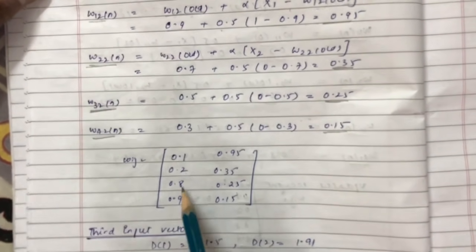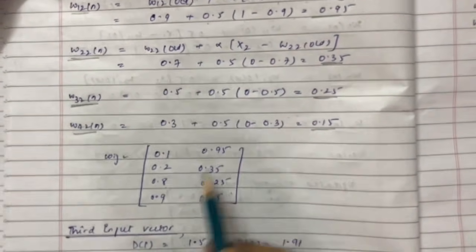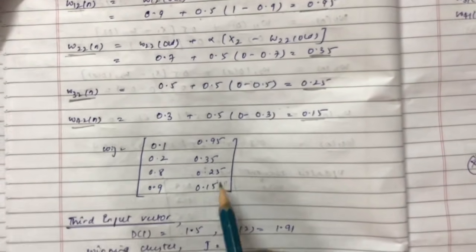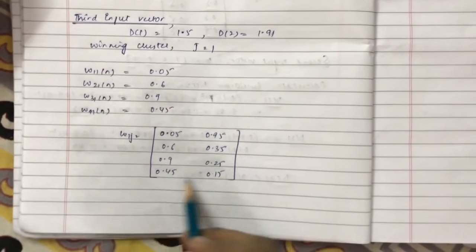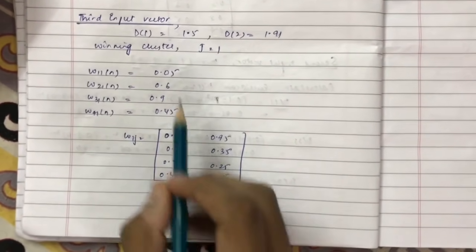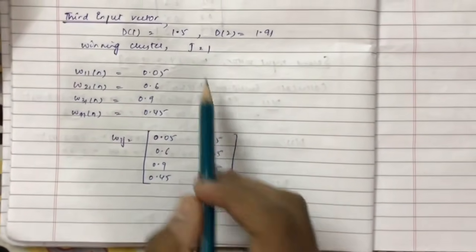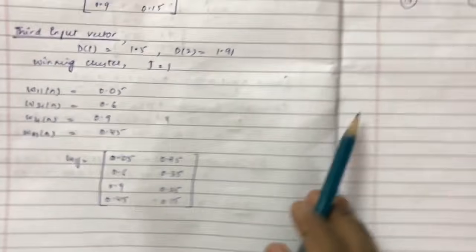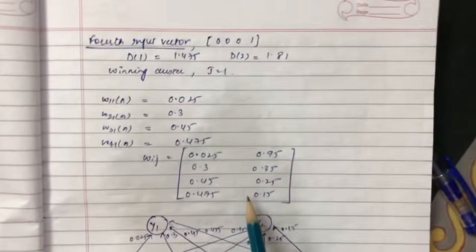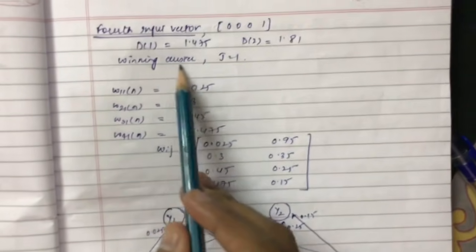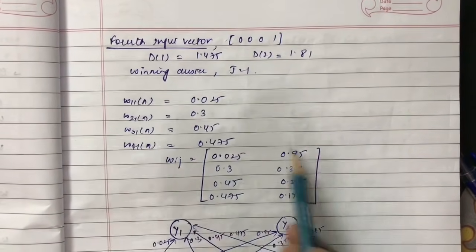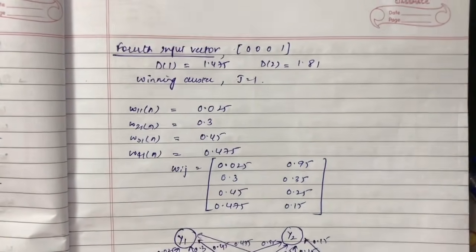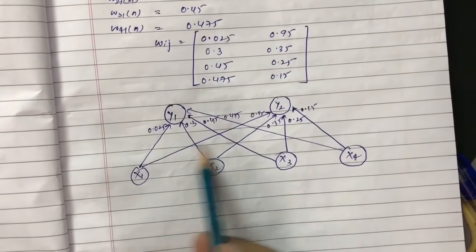After presenting the second input vector, the updated weight matrix is: cluster y1 = [0.1, 0.2, 0.8, 0.9] and cluster y2 = [0.95, 0.35, 0.25, 0.15]. For the third input vector, the updated weight matrix values are presented. For the fourth input vector, the winning cluster is the first cluster, giving us the final updated weight matrix.